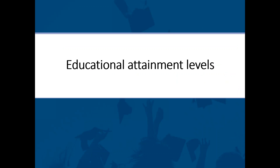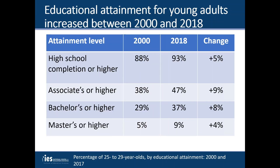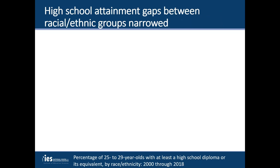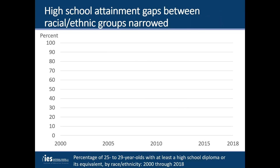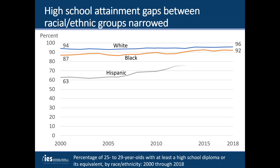The Condition of Education's core indicators include annual updates on a wide range of topics, including educational attainment levels. Overall, educational attainment rose between 2000 and 2018. The percentage of 25 to 29-year-olds who had completed high school increased from 88% to 93%, and the percentage with a bachelor's or higher degree increased from 29% to 37%. During that same period, the gap in high school attainment rates narrowed between white 25 to 29-year-olds and their black and Hispanic peers. In particular, the white-Hispanic gap narrowed due to very rapid increases in high school attainment rates for Hispanic 25 to 29-year-olds.